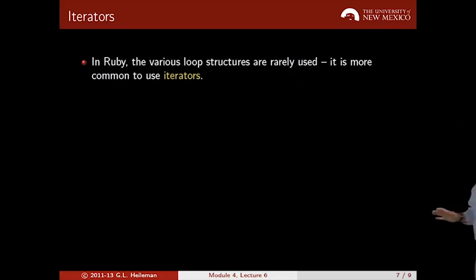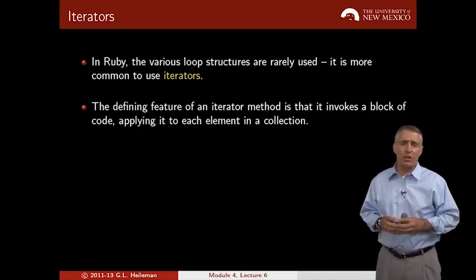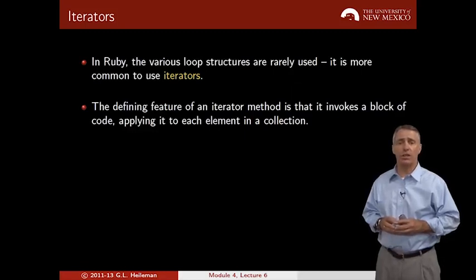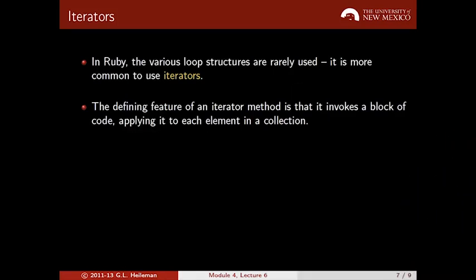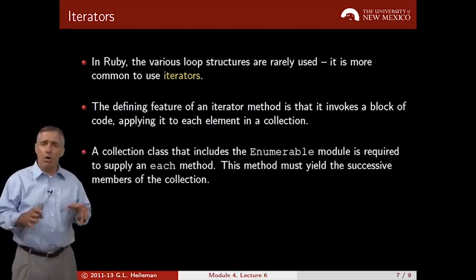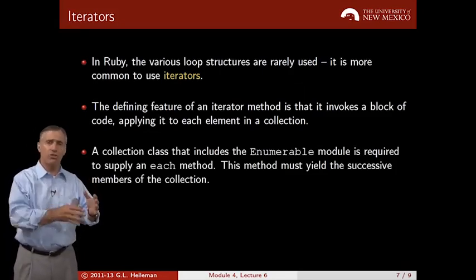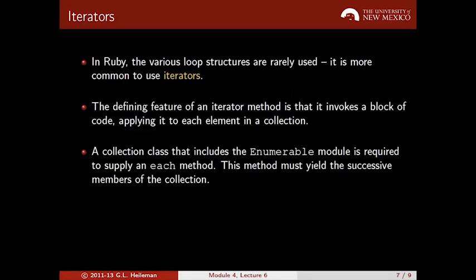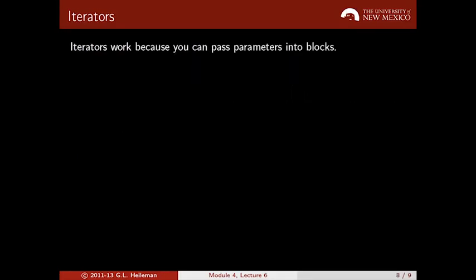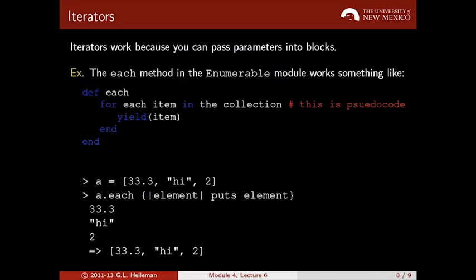Given this, we can better understand now how iterators work in Ruby. As I've already mentioned, the loop structures in Ruby are rarely used. It's a lot more common to use iterators in Ruby to do looping structures. The defining feature of an iterator is that it invokes a block of code, applying it to each element in a collection. Iterators are implemented over collections. When you invoke an iterator, it goes through each element in the collection and performs whatever block of code you pass in. A collection that includes the enumerable module is required to supply this each method. Otherwise, it can't use the enumerable method. That method is required to yield the successive members of the collection.